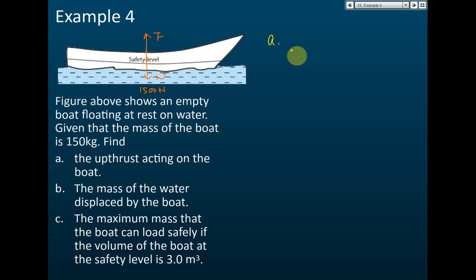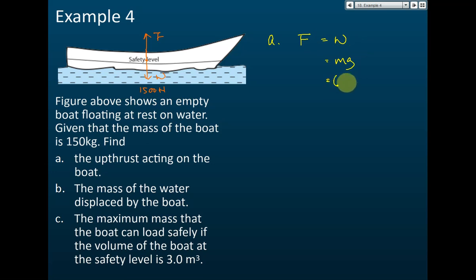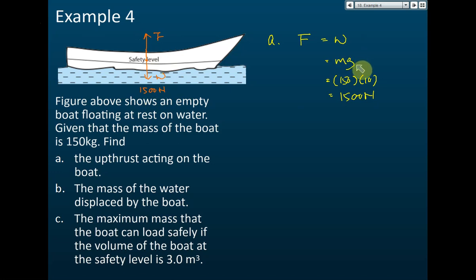Part (a): find the upthrust acting on the boat. According to the Principle of Flotation, the upthrust equals the weight of the object. Using W = mg, with mass = 150 kg and g = 10 N/kg, the weight is 1500 N. Therefore the upthrust must also be 1500 N.